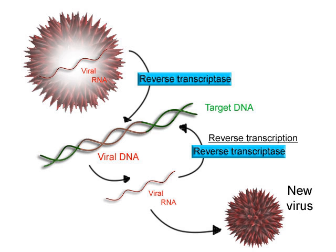Only one of the two DNA strands serves as a template for transcription. The anti-sense strand of DNA is read by RNA polymerase from the 3' end to the 5' end during transcription. The complementary RNA is created in the opposite direction, in the 5' to 3' direction, matching the sequence of the sense strand with the exception of switching uracil for thymine.